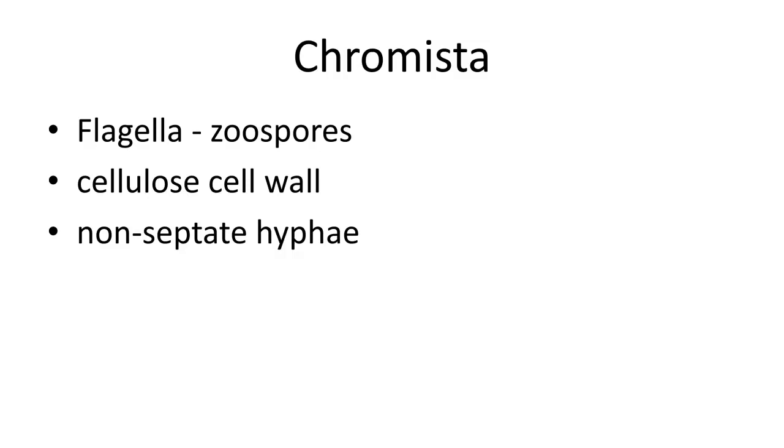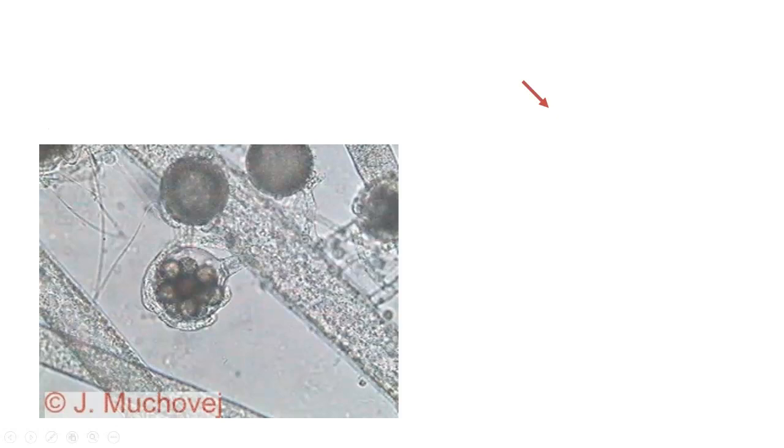When we look at the Chromista, we see things like this. In this particular picture, you see a sphere, inside of the sphere you see several little smaller spheres. On the outside of the sphere, we see some hyphae-like material, and you can see hyphae-like material on the inside as well.